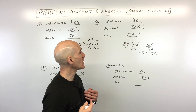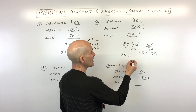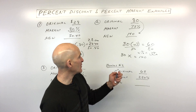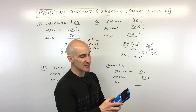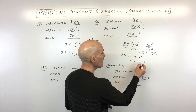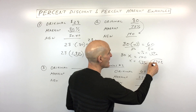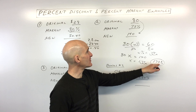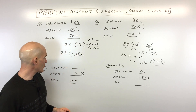Method two: 80 times X equals 140. Divide both sides by 80: 140 divided by 80 equals 1.75, or 175%. Since 100% represents the original amount, the additional 75% is the markup percentage.